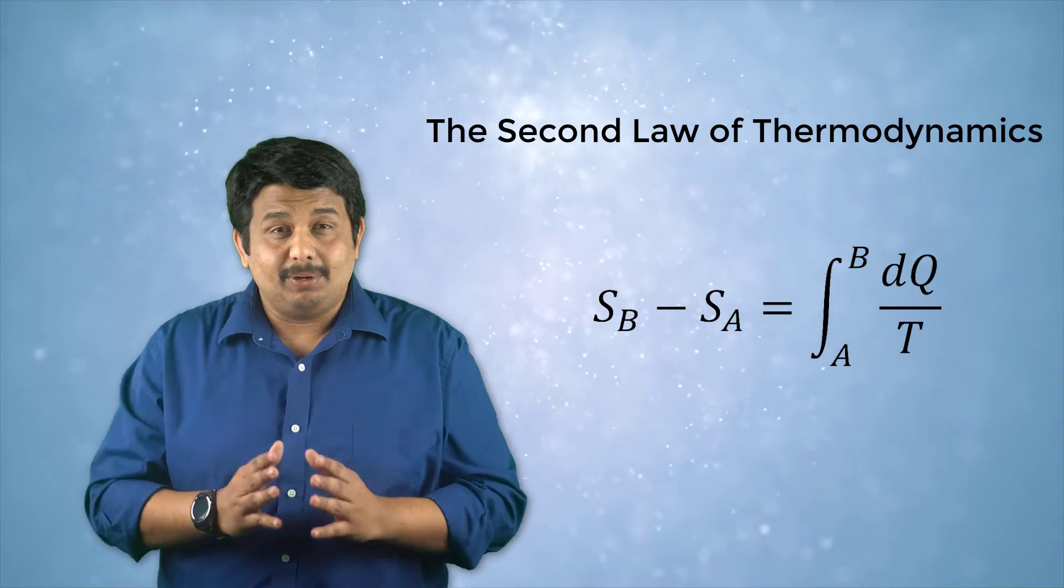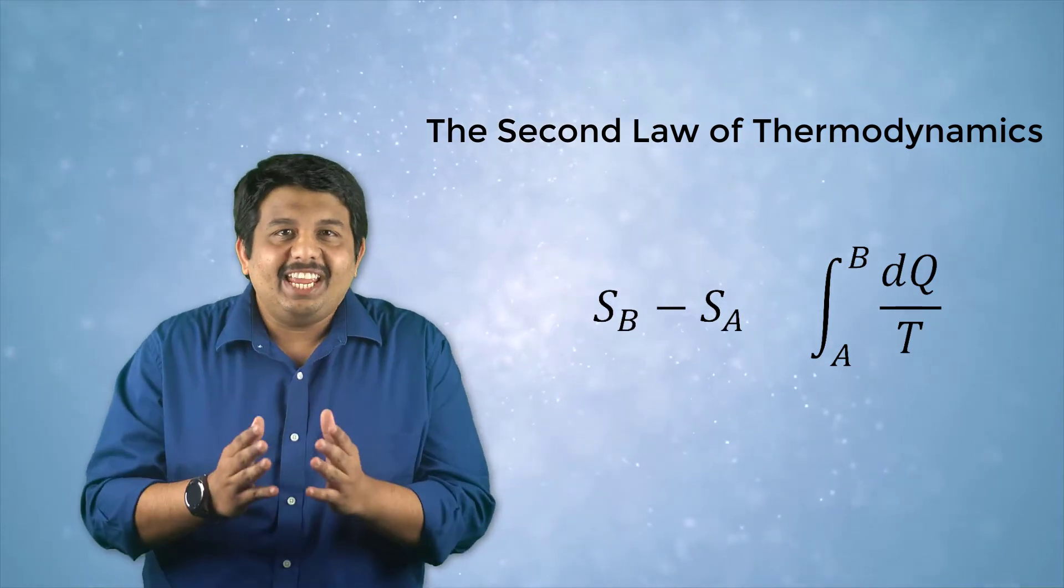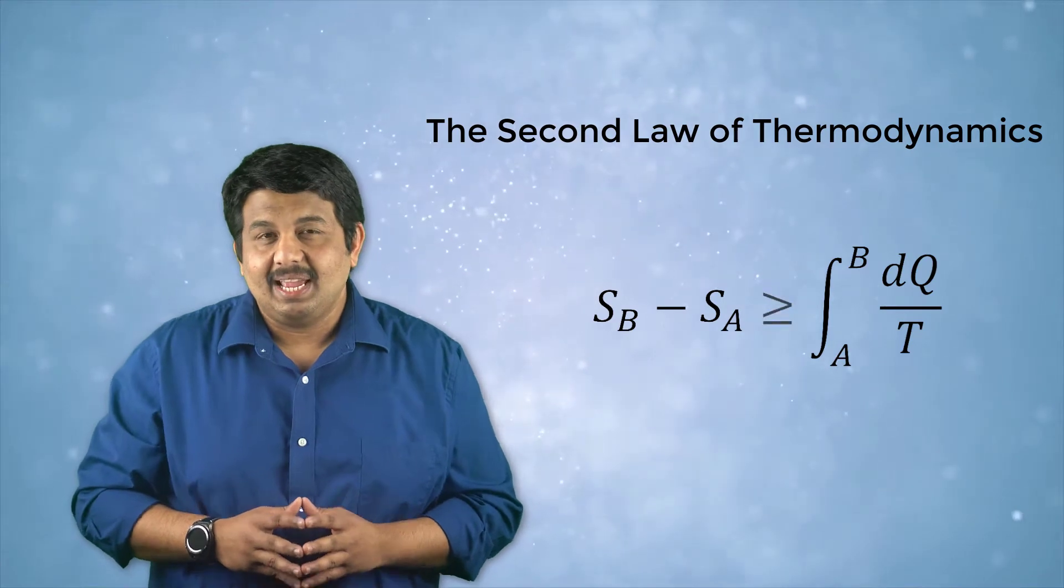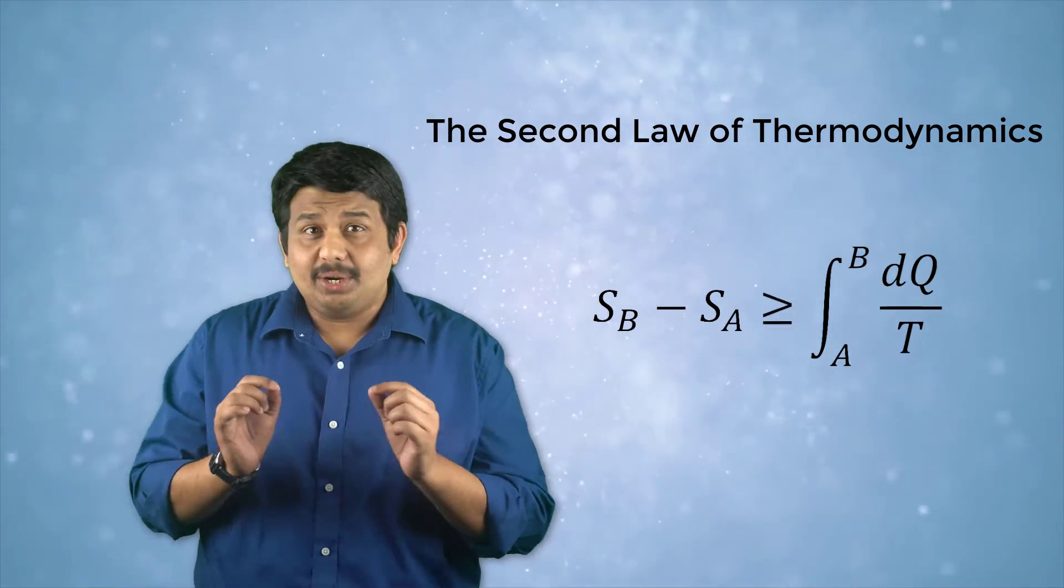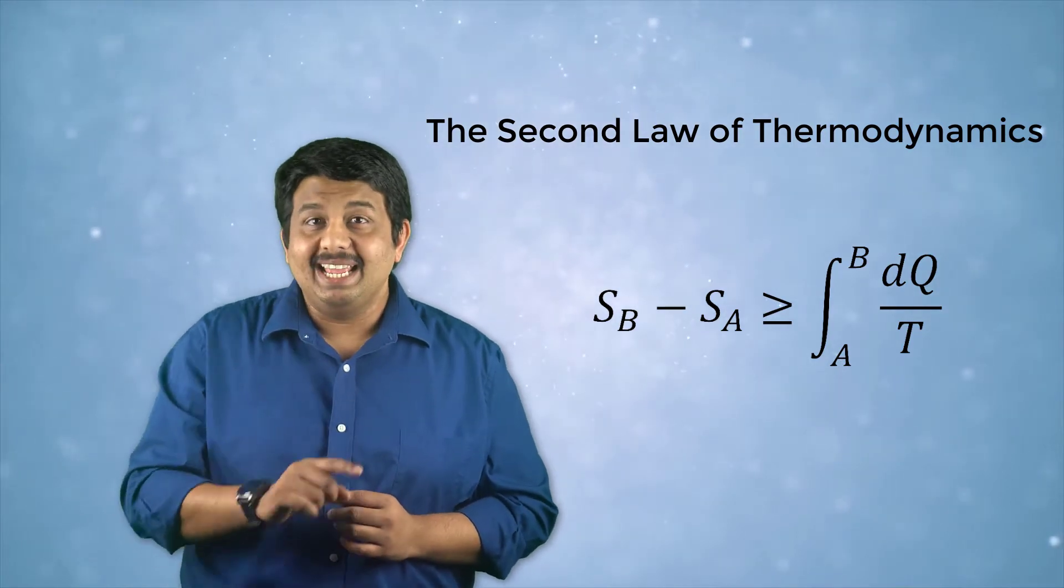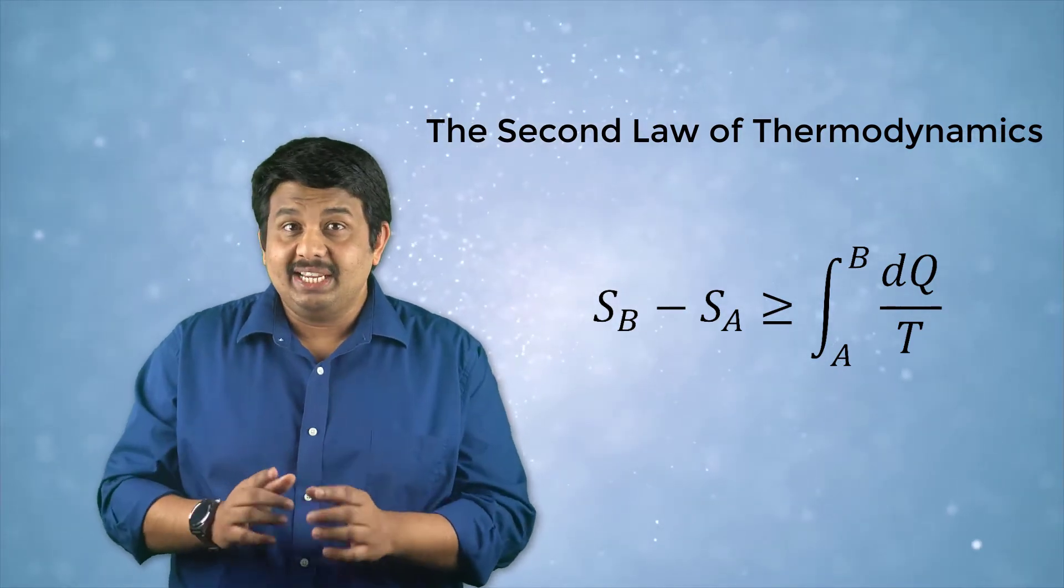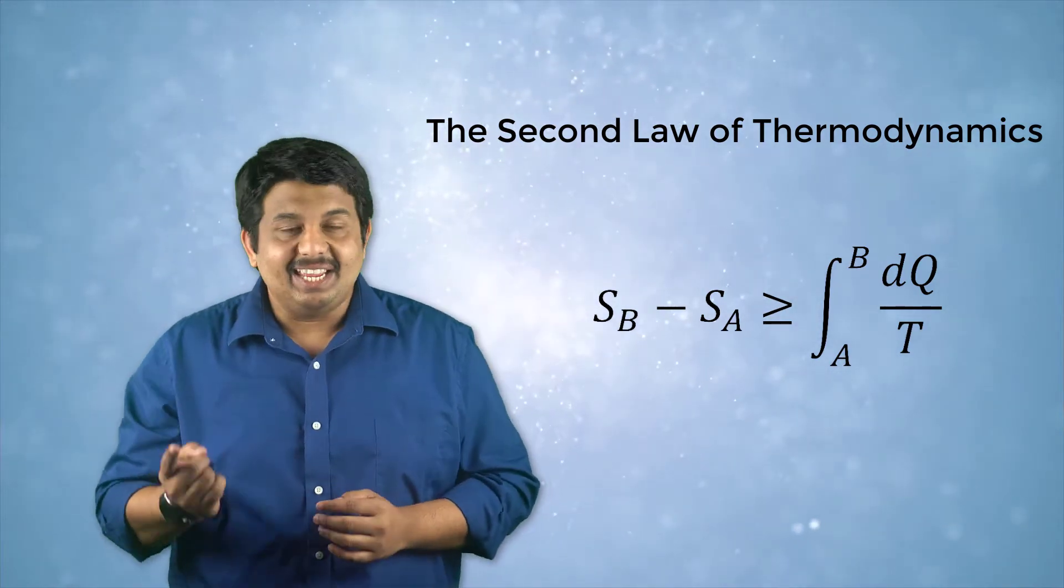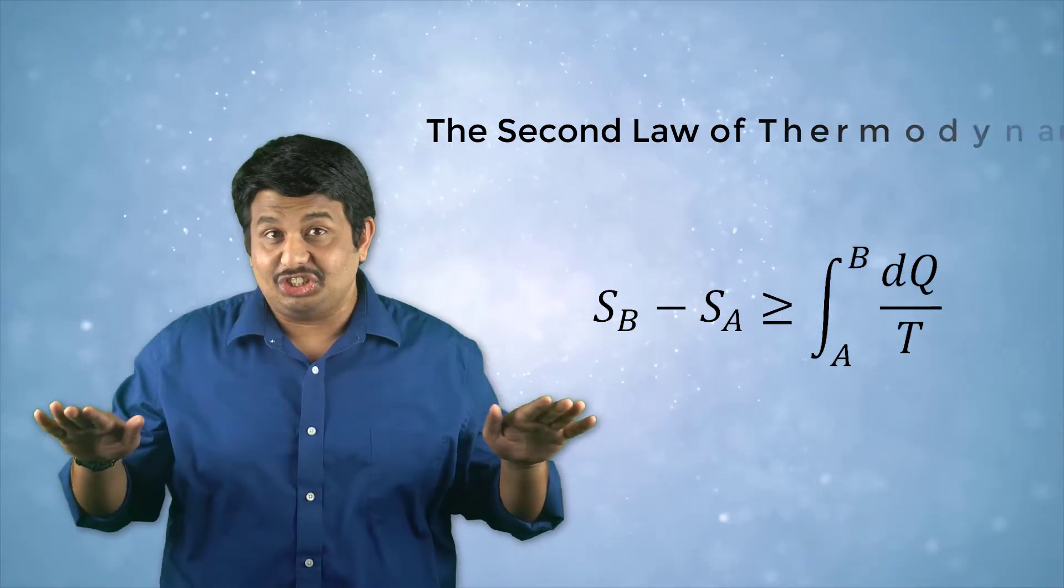In the case of an irreversible process, the change in entropy is always greater than zero. And therefore, according to the second law, the process will only proceed in a direction in which the entropy of the system and its surroundings increases or remains unchanged.